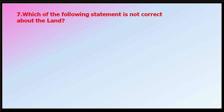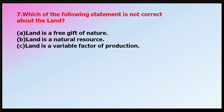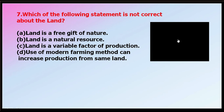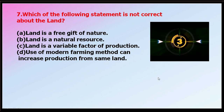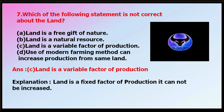Question number seven: which of the following statements is not correct about land? Options: land is a free gift of nature; land is a natural resource; land is a variable factor of production; or use of modern farming methods can increase production from the same land. The correct answer is that land is a variable factor of production — this is not correct. Land is a fixed factor of production because it cannot be increased. The other three statements are correct.